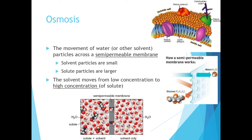A picture of osmosis can be seen here, where in the middle there is a semipermeable membrane, pure solvent on the right-hand side, and solvent plus solute on the left-hand side. Water will always move from the area of low concentration of solute on the right to where there is more solute on the left. Movement occurs from right to left in this scenario, across the semipermeable membrane.